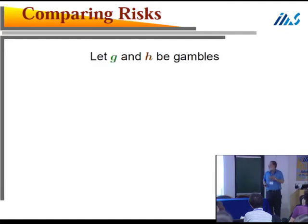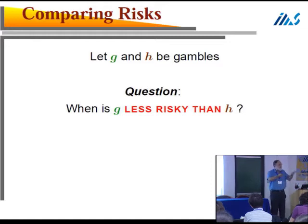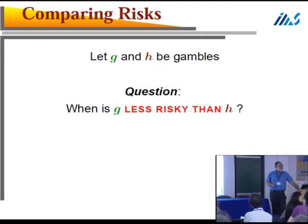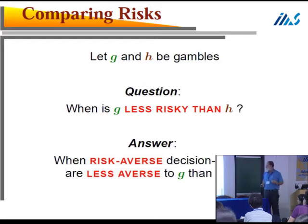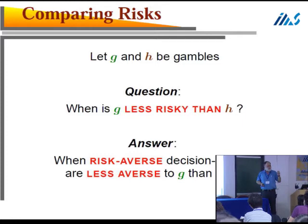Now we want to compare risk. Take two gambles G and H — which one is more risky, which one is less risky? Here is an idea: let's take people that hate risks, called risk-averse decision makers. Whatever they hate more is clearly more risky. So G is less risky than H when risk-averse decision makers are less averse to G than to H — in short, when people that hate risk hate G less than H.